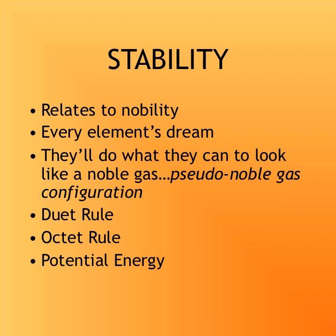Let's talk a little bit about stability. Stability of an atom or of an ion relates to its nobility — how many valence electrons it has and how close it is to being a noble gas. Every element dreams of being a noble gas, and they all strive to get there. If they can't really be one, they want to look like one, and that's how they attain a pseudo-noble gas electron configuration.